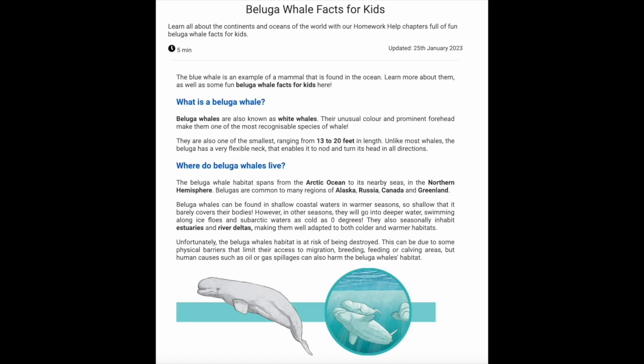What is a beluga whale? Beluga whales are also known as white whales. Their unusual color and prominent forehead make them one of the most recognizable species of whale. They are also one of the smallest, ranging from 13 to 20 feet in length. Unlike most whales, the beluga has a very flexible neck that enables it to nod and turn its head in all directions.